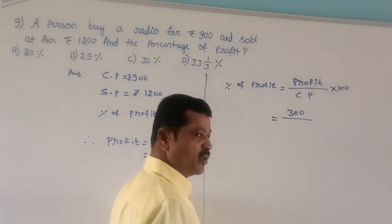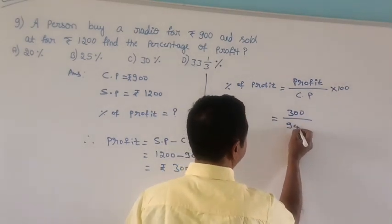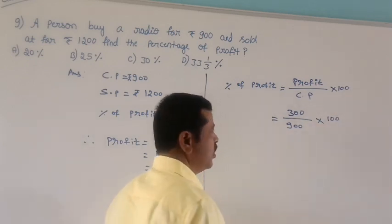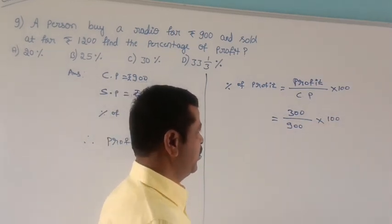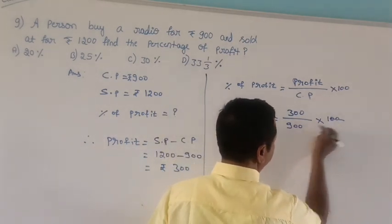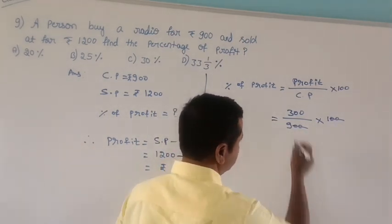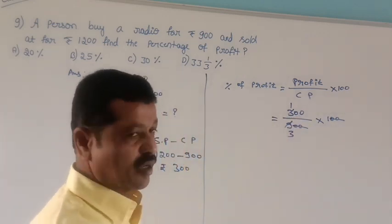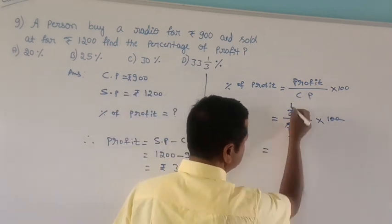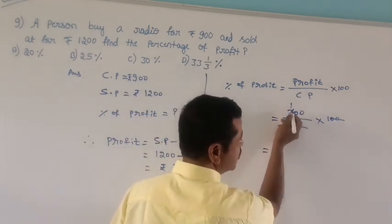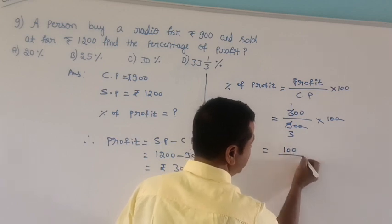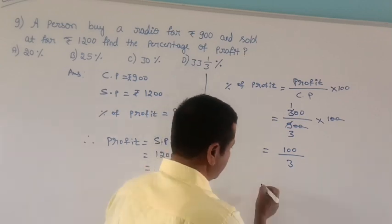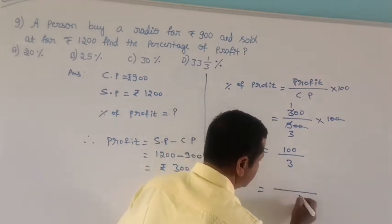Percentage of profit is equal to profit divided by cost price into 100. Profit 300 rupees, CP 900 into 100. 100 by 3 equals 33 and one-third percent.